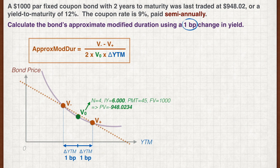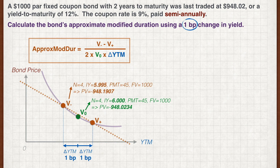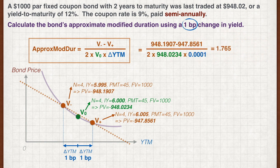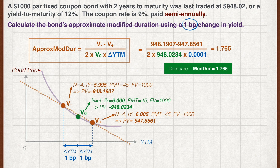Using 6% as the discount rate, as the coupons are paid semi-annually, we get V naught as 948.0234. Next we calculate V minus where the yield to maturity is lower by one basis point — halving this as the coupons are paid semi-annually, so using a discount rate of 5.995% we get V minus as 948.1907. Similarly, we calculate V plus where the yield to maturity is higher by one basis point — using a discount rate of 6.005% we get V plus as 947.8561. Plugging all the figures into the formula we get an approximate modified duration of 1.765, which is the same as the modified duration calculated in the previous lesson.